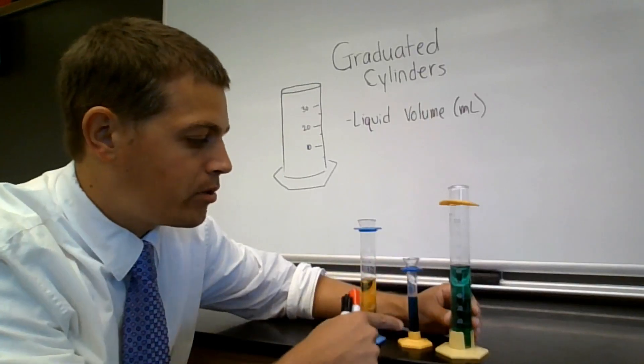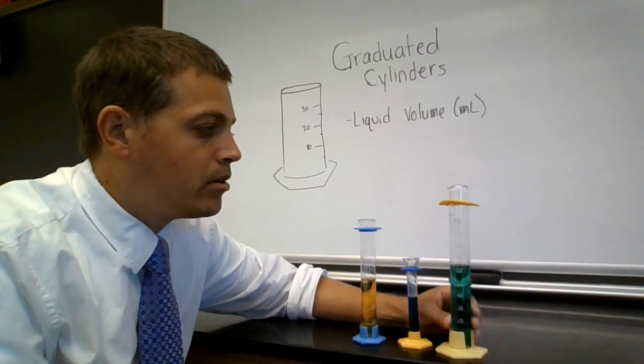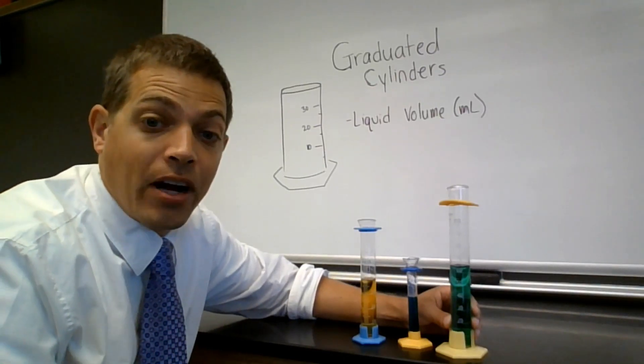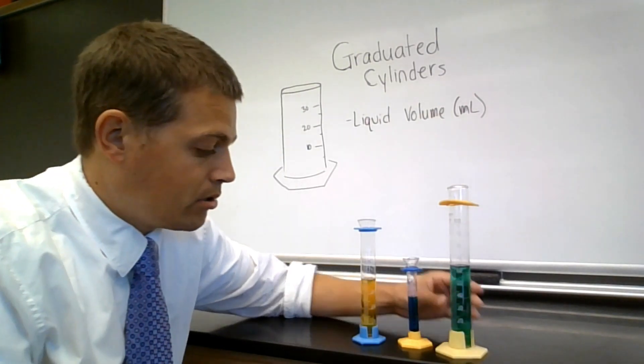You need to look carefully at the numbers on the side. Sometimes they go by one, sometimes by fives, by tens, or even sometimes by fractions of a milliliter. So be very careful when you're making your measurements.